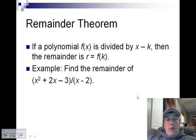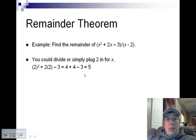For example, if we had x squared plus 2x minus 3 divided by x minus 2, I could find this remainder by simply plugging 2 in for x. This would give me 2 squared plus 2 times 2 minus 3. This would be direct substitution, and that would give me an answer of 5.